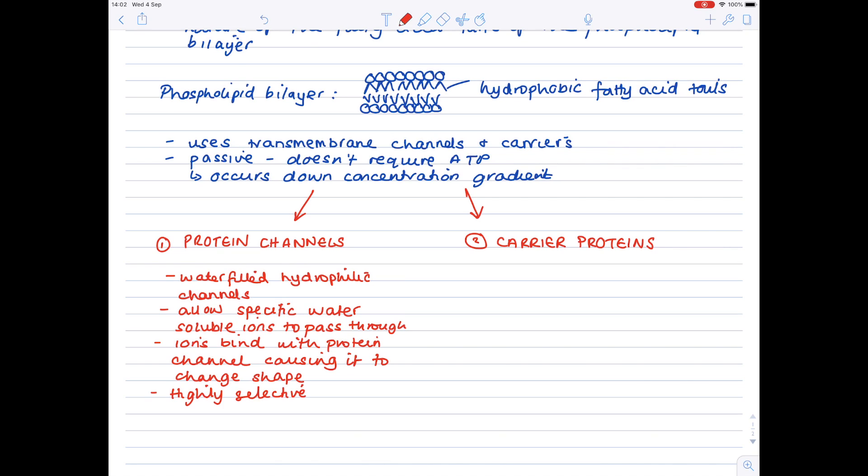So how about carrier proteins? Now, carrier proteins help molecules such as glucose to cross the membrane. The molecule itself causes the carrier protein to change shape, and that results in that molecule being released into the cell.